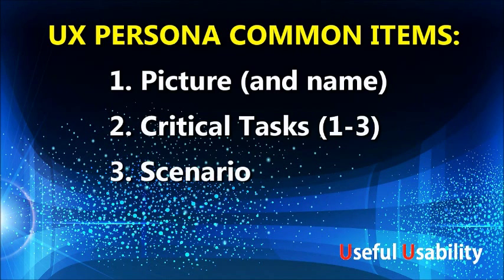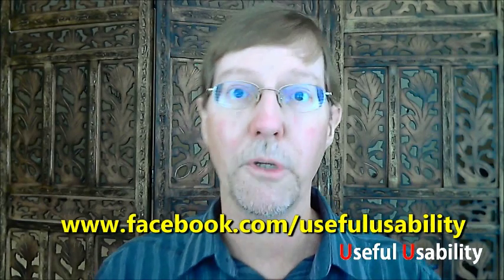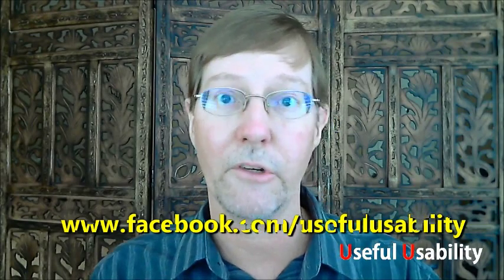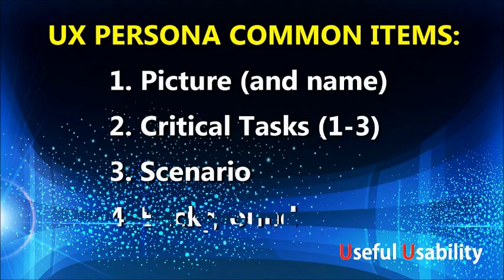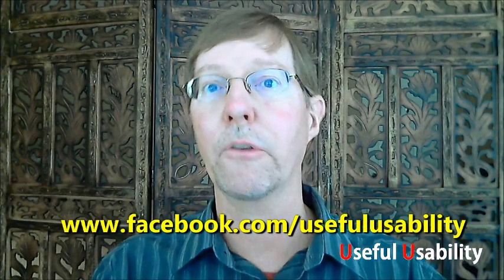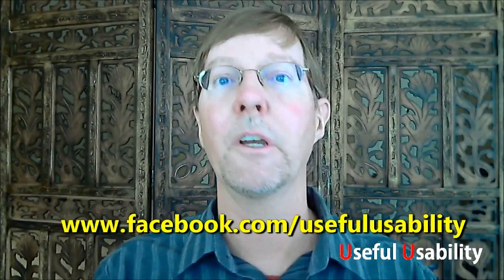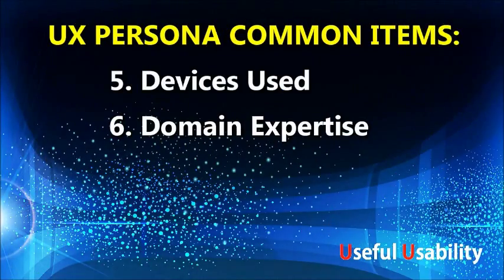Number three is the scenario — specific to the critical tasks, we want to make sure we have a scenario for usage. This may not necessarily be part of a design persona à la Alan Cooper, but for UX research and usability testing that scenario is very helpful; it really helps to set up the script we'll use going into testing. Number four is the background for the scenario, which helps people reviewing the research understand why we recruited the people we did and what the scenario of usage is for this particular study.